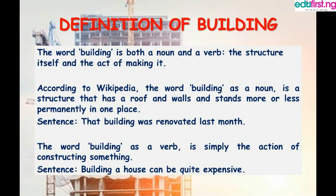According to Wikipedia, the word building as a noun is a structure that has a roof and walls and stands more or less permanently in one place. Now let's make a sentence with building as a noun: 'That building was renovated last month.' The word building as a verb is simply the action of constructing something. Now let's make a sentence with the word building as a verb: 'Building a house can be quite expensive.'